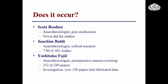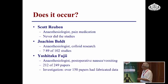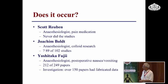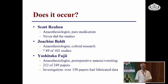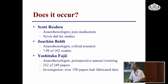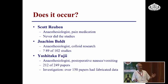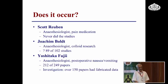I dread taking this slide to an audience which is full of anaesthetists. Three anaesthetists never did studies on pain medication — over 100 papers all now retracted. On colloid research, 89 of his 102 studies were fraudulent. 212 of 249 papers investigated on work on postoperative nausea and vomiting had over 150 papers with fabricated data. How did this come about? Six editors of anaesthesia journals got together and said there is something wrong with these guys' papers, and they started investigating this and found it.